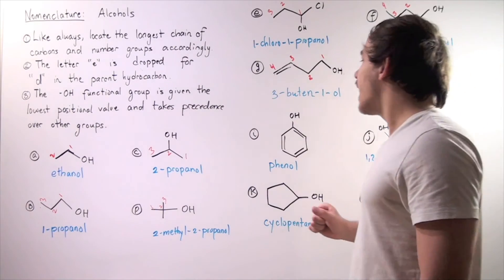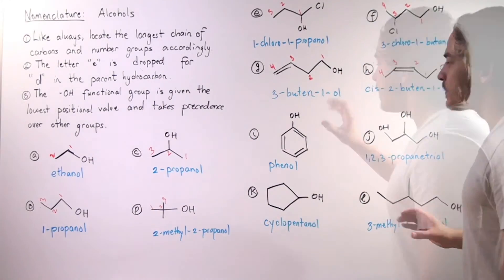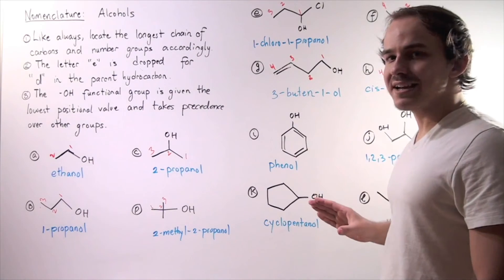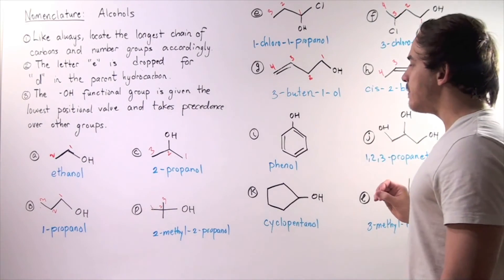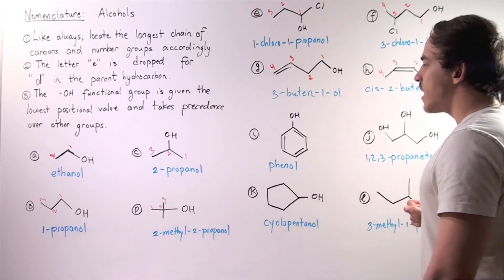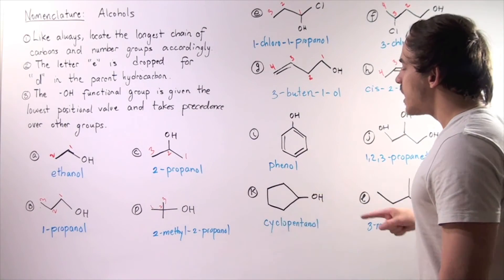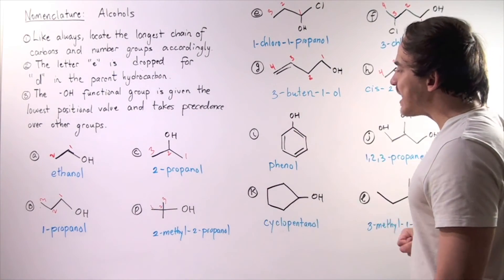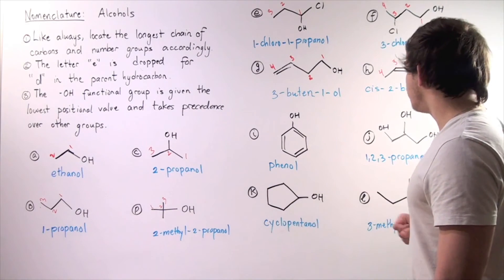Example I requires memorization. This compound has a specific systematic name, but the most common name used is simply phenol. This benzene ring with an OH attached is known as phenol.